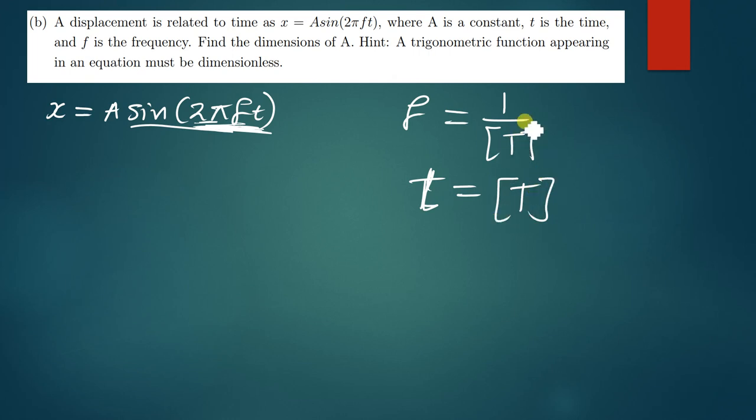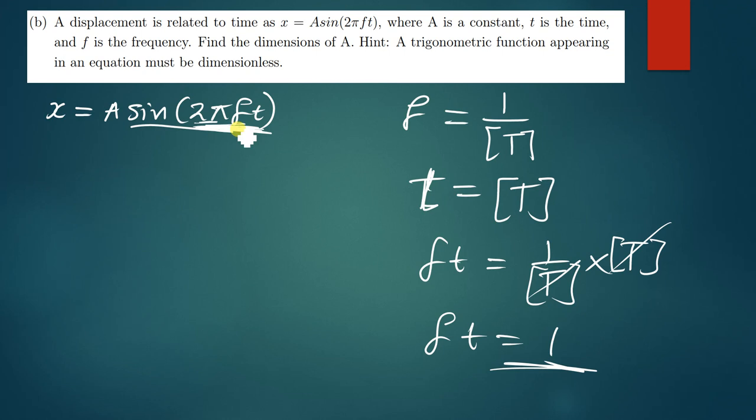So when you multiply f and t, you're simply multiplying 1 over T times T. So if you check, this and this are going to cancel. So you simply just remain ft. I mean ft will simply just remain as one which is a constant. So you can see that what the question is saying, that this part is a constant, is true.